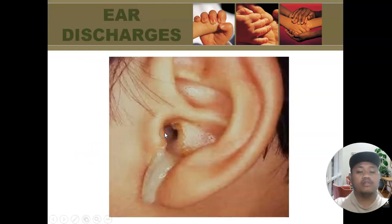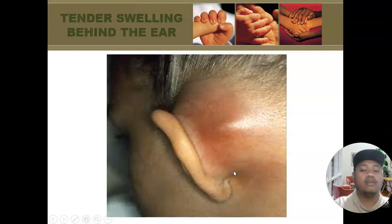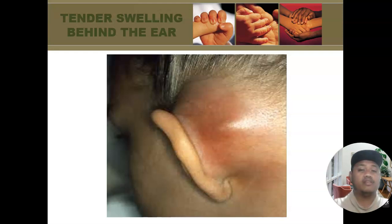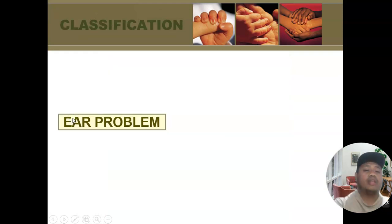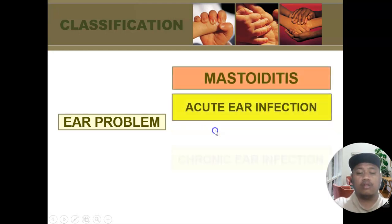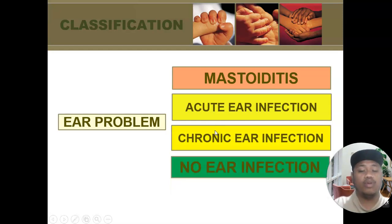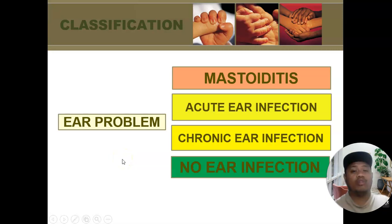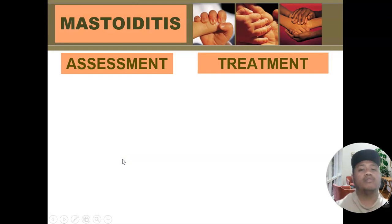This is what ear discharge looks like — called 'luga' in Filipino — and this is what a tender swelling behind the ear looks like. Those are the assessment findings to note when assessing the child's ear. There are four classifications under ear problem: mastoiditis, acute ear infection, chronic ear infection, and no ear infection. Let's discuss how to classify them accordingly, starting with mastoiditis.